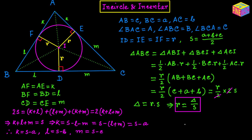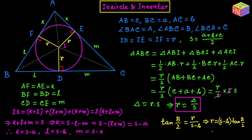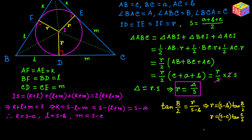Looking at right triangle BDI, the angle IBD equals B/2 because BI is the bisector of angle B. In this right triangle, tan(B/2) equals opposite over adjacent, which is r over BD, and BD equals l which is S − b. So tan(B/2) = r/(S − b), giving us r = (S − b)·tan(B/2). Similarly, r = (S − c)·tan(C/2) and r = (S − a)·tan(A/2). These are important relationships between the triangle and its incircle.